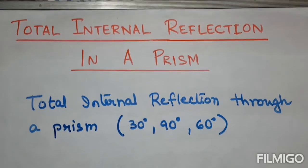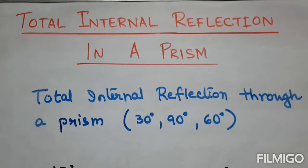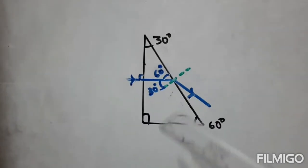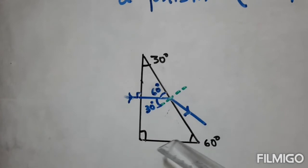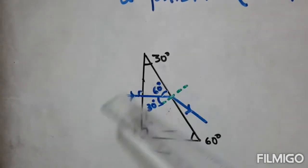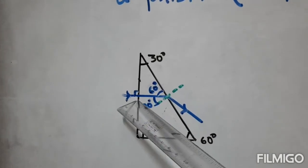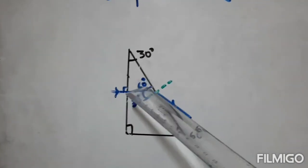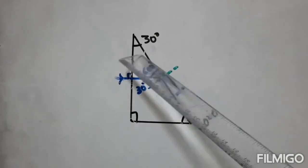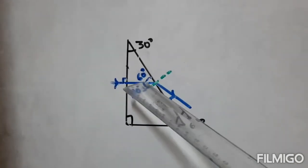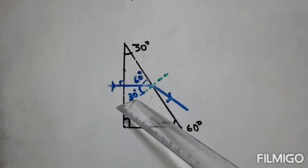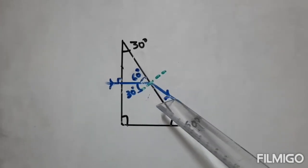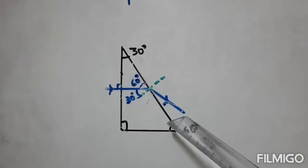Total internal reflection through a right prism with angles 30°-90°-60°. In the first case, the incident ray is perpendicular on the first surface. The angle at which it strikes the second surface is calculated as 60°-30°-90°-60°. The angle of incidence is 30°, so it does not undergo total internal reflection. Instead, it undergoes refraction and goes out of the prism.